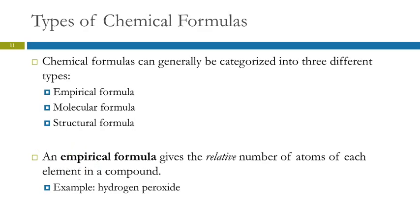This word empirical means that it comes from experimentation. The empirical formula gives us the relative numbers of atoms. As an example, we can look at hydrogen peroxide. The molecular formula for hydrogen peroxide is H2O2. One molecule of hydrogen peroxide contains two hydrogen atoms and two oxygen atoms.